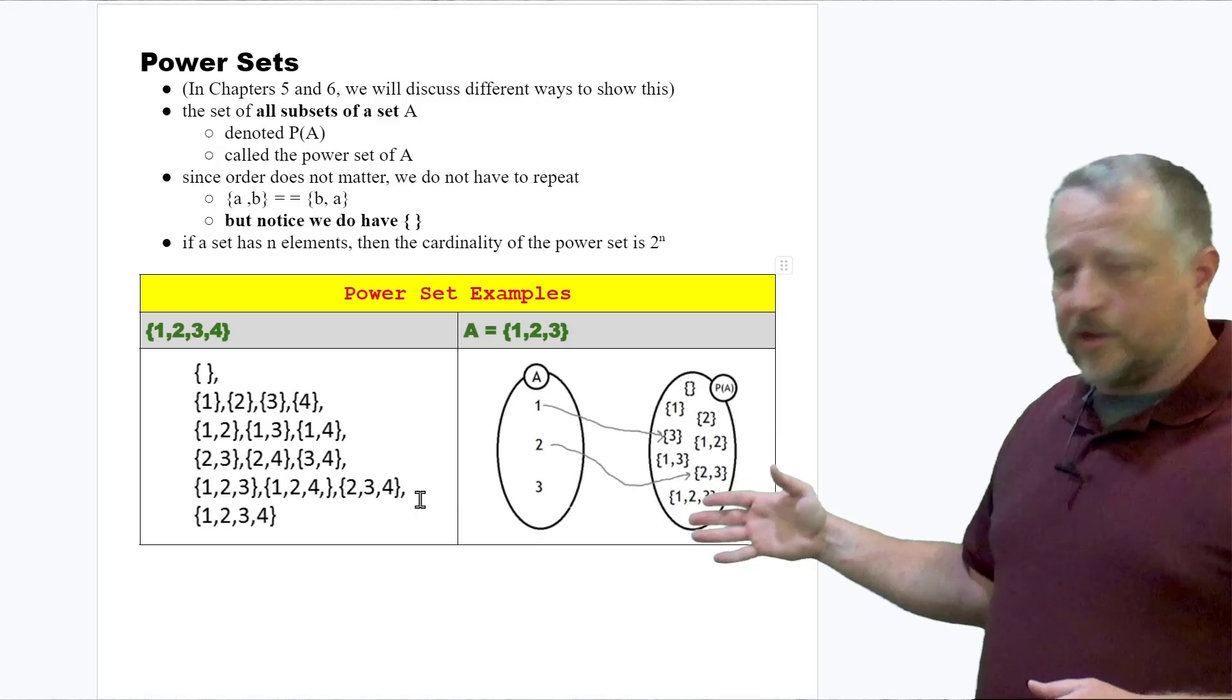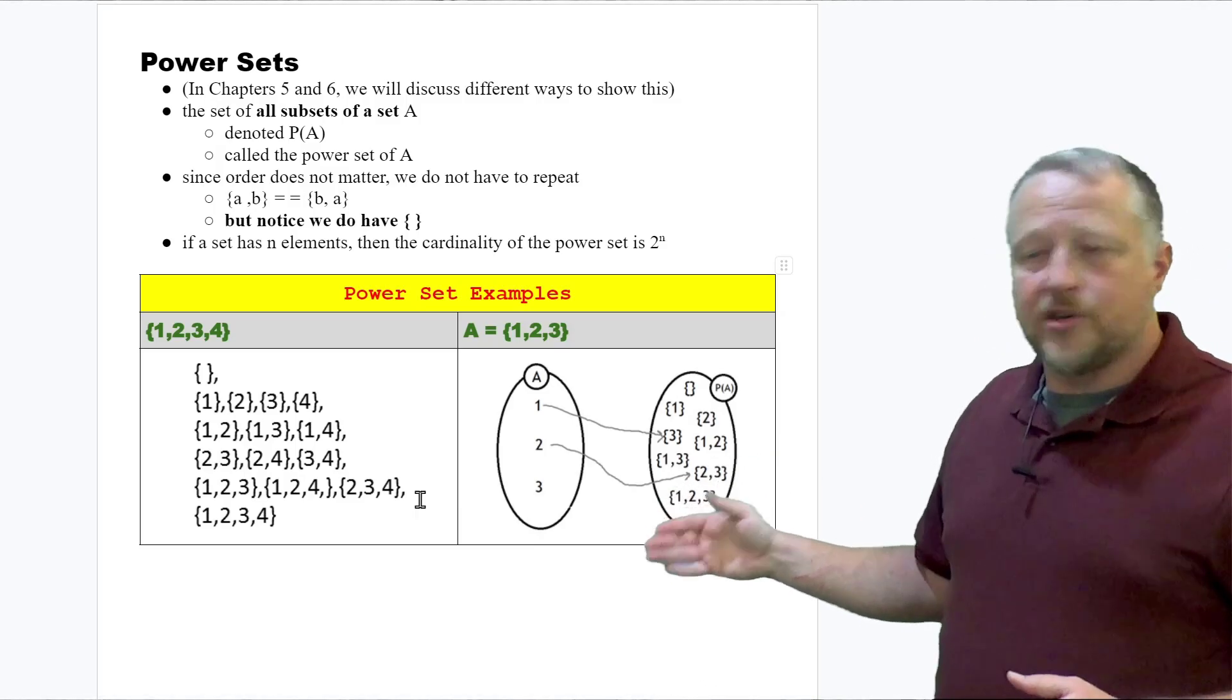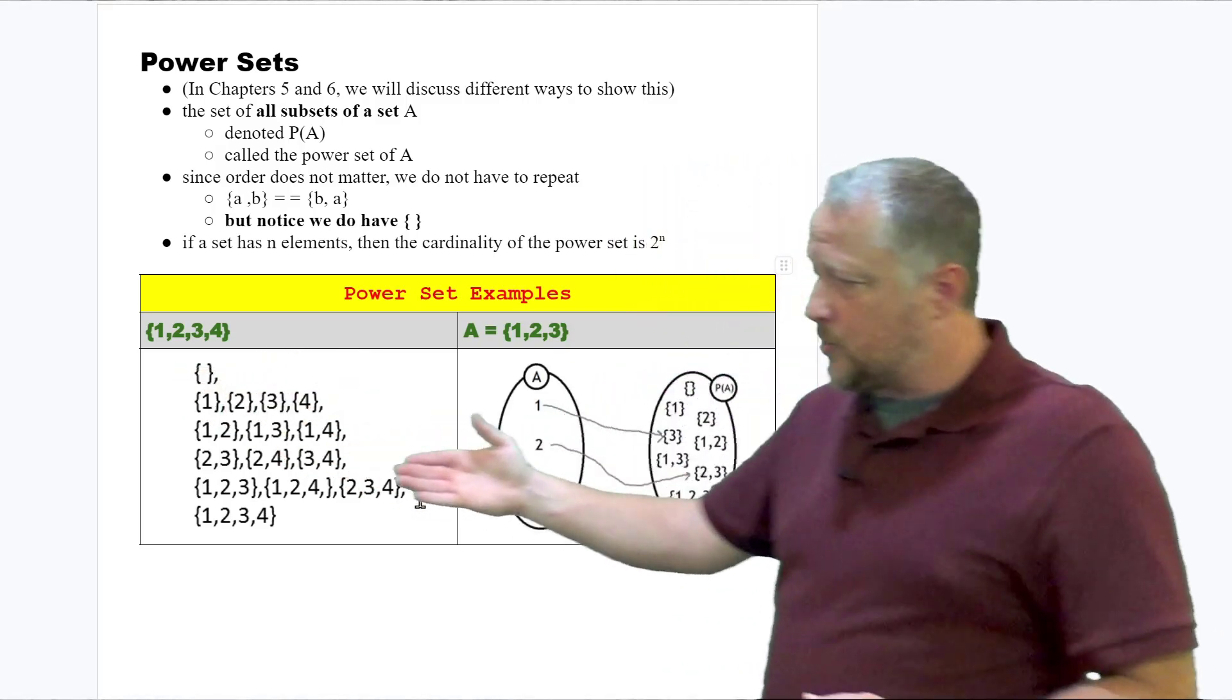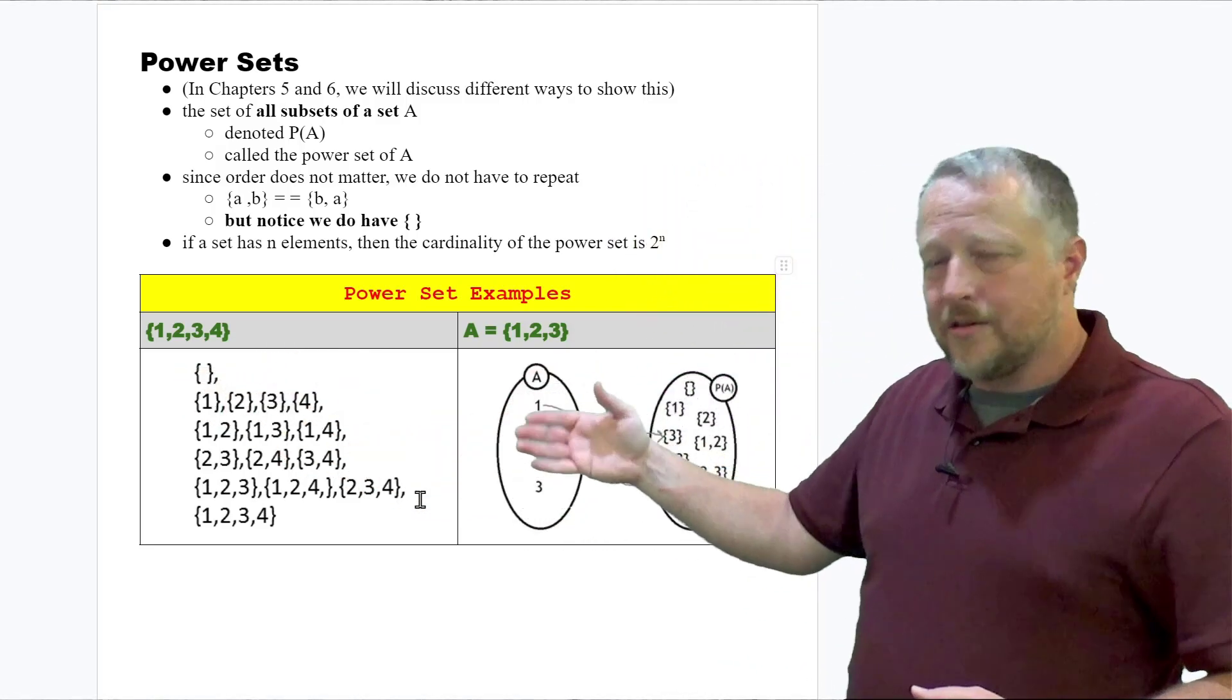But notice the values are different on this. We just don't have as many combinations as we did with this one. And that makes sense because we have four numbers in this one. We only have three in this one.